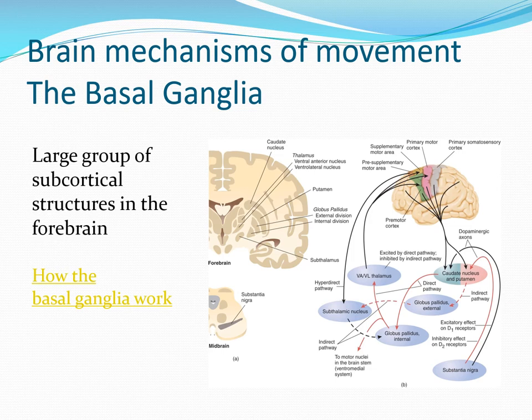What the striatum is doing in the direct pathway is inhibiting an inhibitor. The thalamus has a lot of communication with the motor cortex, and if we weren't inhibiting this we'd just be moving all the time. The globus pallidus internal has a lot of spontaneous activity and inhibits all of that possible motor movement. When I decide to make a conscious movement, the striatum inhibits the globus pallidus internal — inhibiting the inhibitor — which allows me to make the movement I voluntarily want to make.